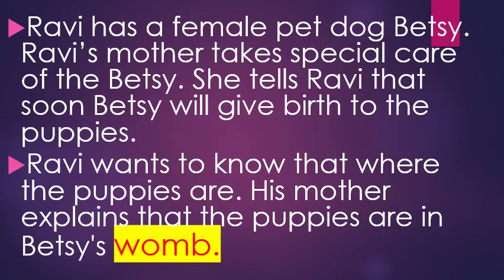Ravi has a female pet dog, Betsy. Ravi's mother takes special care of Betsy. She tells Ravi that soon Betsy will give birth to puppies. Ravi wants to know where the puppies are. His mother explains that the puppies are in Betsy's womb.